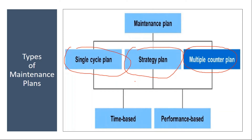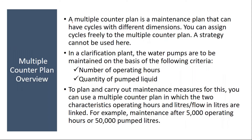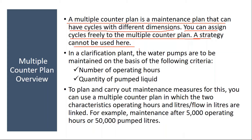Multiple counter plan means you have two counters. You do preventive maintenance considering two counters at the same time. In the single cycle plan and strategy plan, we considered only one counter, but here we will be considering two counters. A multiple counter plan is a maintenance plan that can have cycles with different dimensions. You can assign cycles freely to the multiple counter plan. A strategy cannot be used here — you will not have a strategy.